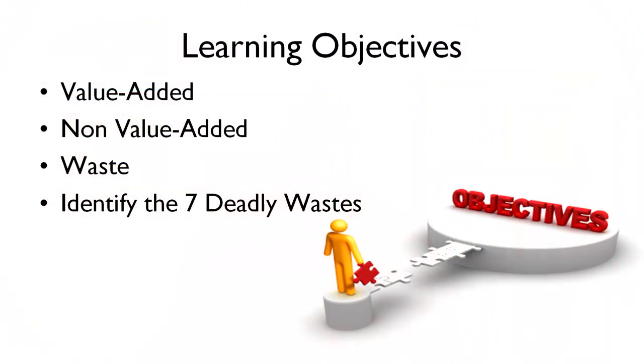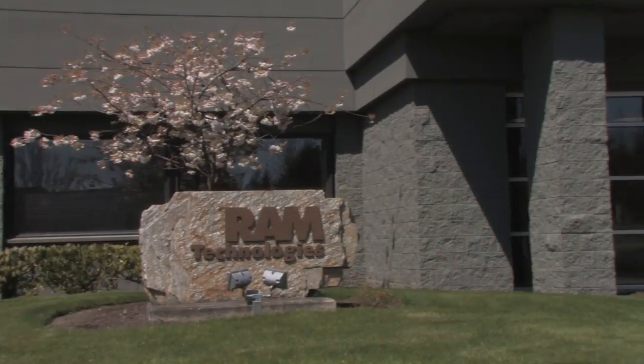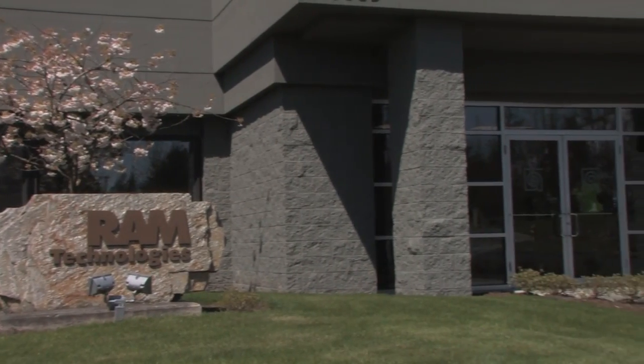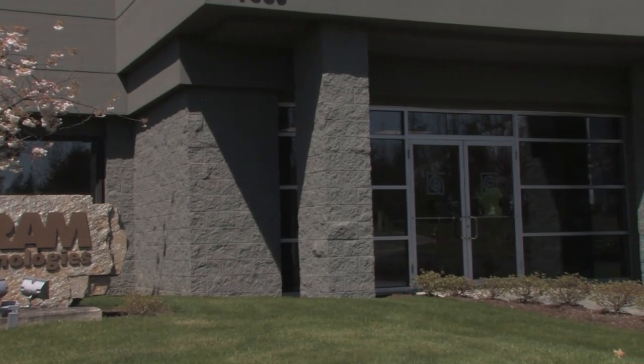By the end of this module, you'll know exactly what it means for an activity to be value-added, non-value-added, or waste. You'll also be able to identify what are commonly referred to as the seven deadly wastes. Throughout this course on the seven wastes, we'll be visiting Ram Technologies, a custom foam fabricator located in Washington. While inside their factory, we'll do our best to demonstrate what each of the seven wastes look like while also showing what things look like when these wastes are eliminated.